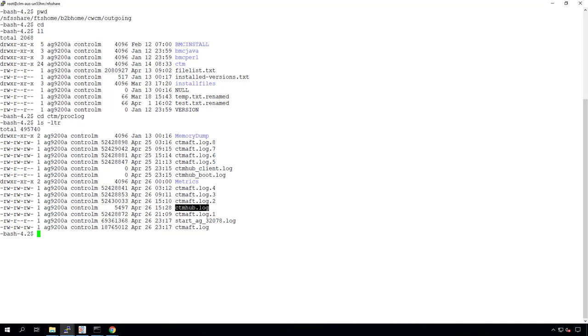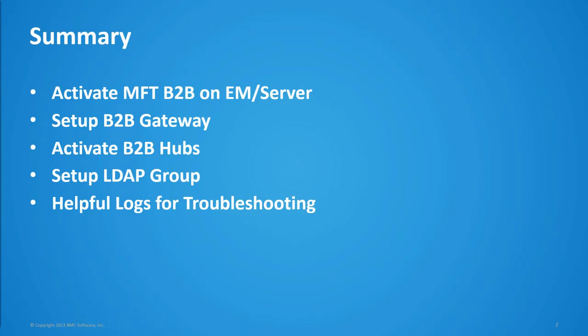With that, we'll conclude our demo and go back to the slides. In summary, during the demo we went through activating MFT B2B on the Enterprise Manager server, setting up the B2B gateway on the DMZ host, creating a high availability cluster for B2B hubs by activating three hubs and configuring a shared drive between them as the file transfer server home. We were also able to set up LDAP authentication for external users, and concluded the demo by looking at helpful logs for troubleshooting issues in MFT B2B gateway and B2B hubs.